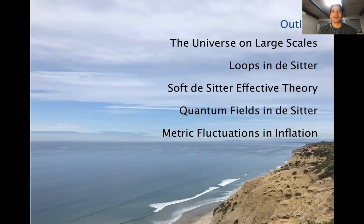I'll try to give you some flavor of why there is so much confusion and disagreement, and some of the technical aspects of how you calculate loop corrections to inflationary or de Sitter correlators. Once we understand the problems, we'll introduce soft de Sitter effective theory, then apply it to quantum fields in a fixed de Sitter background with no dynamical gravity, and finally to metric fluctuations during inflation including both scalar and tensor metric fluctuations.